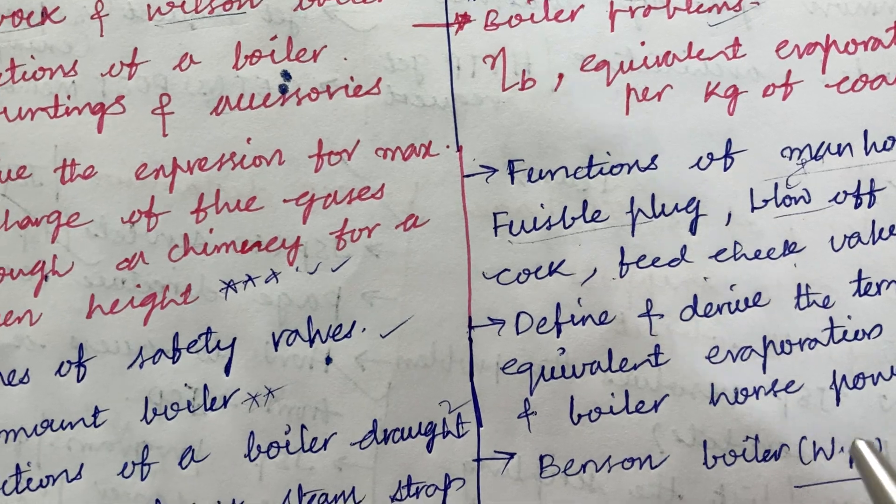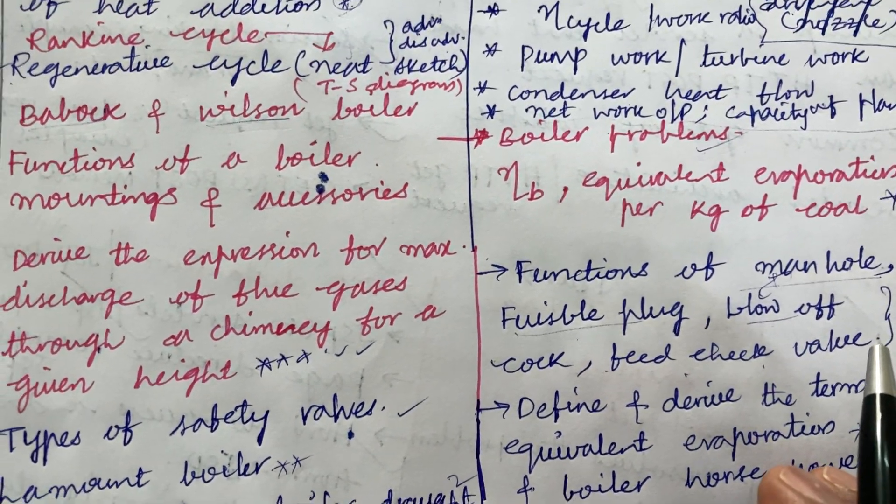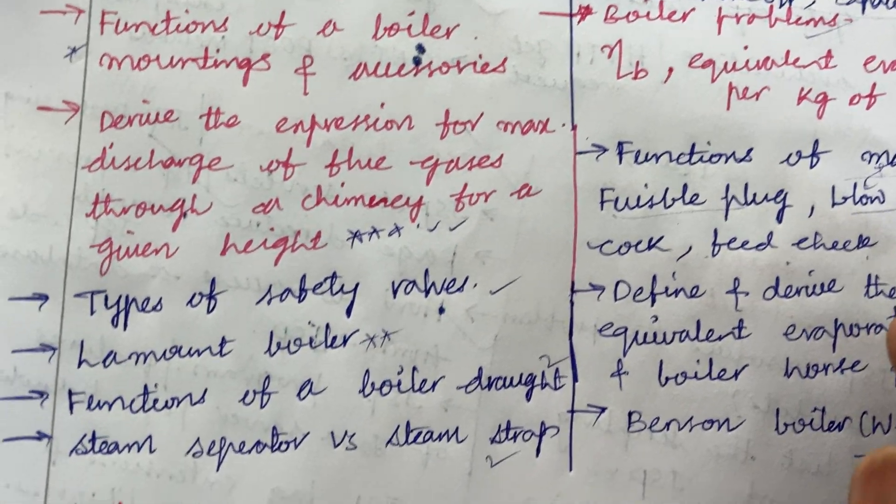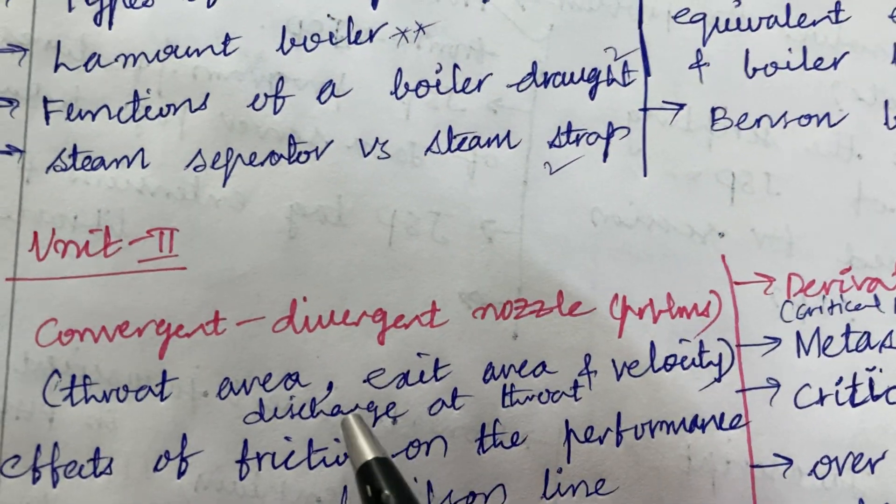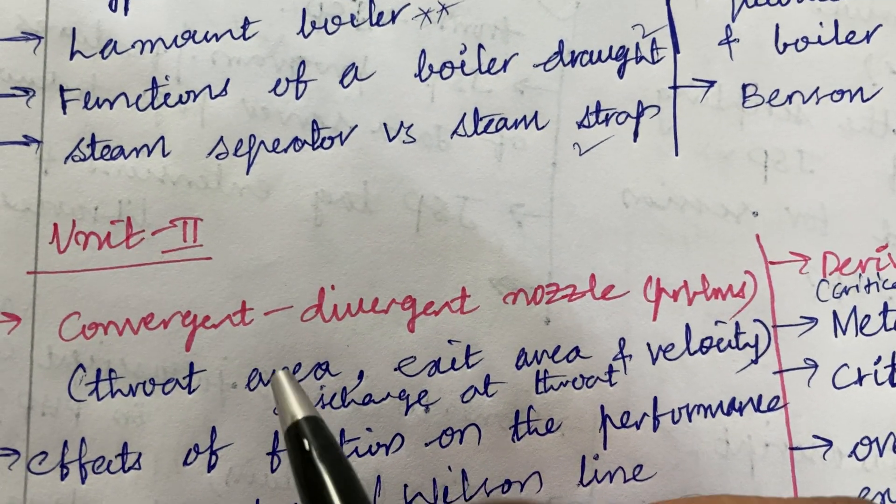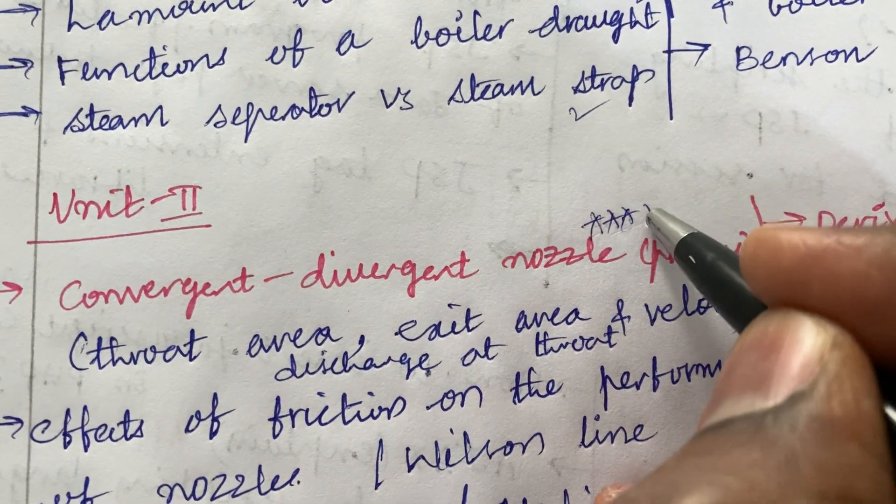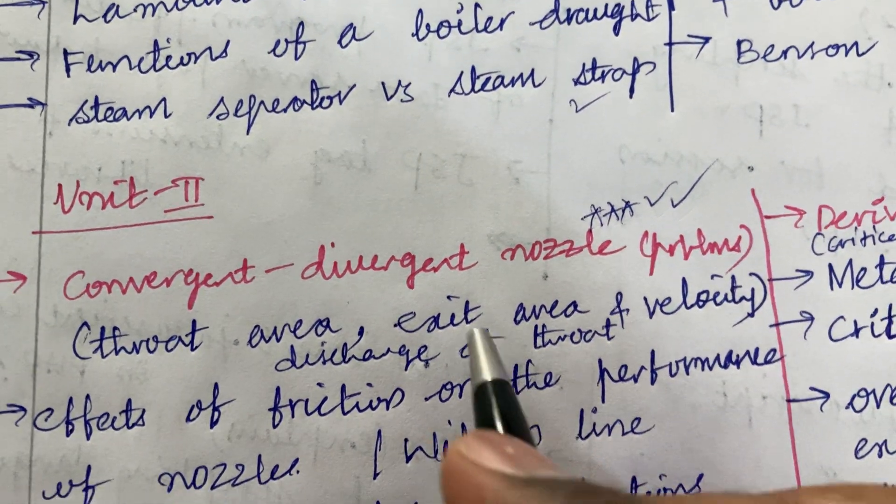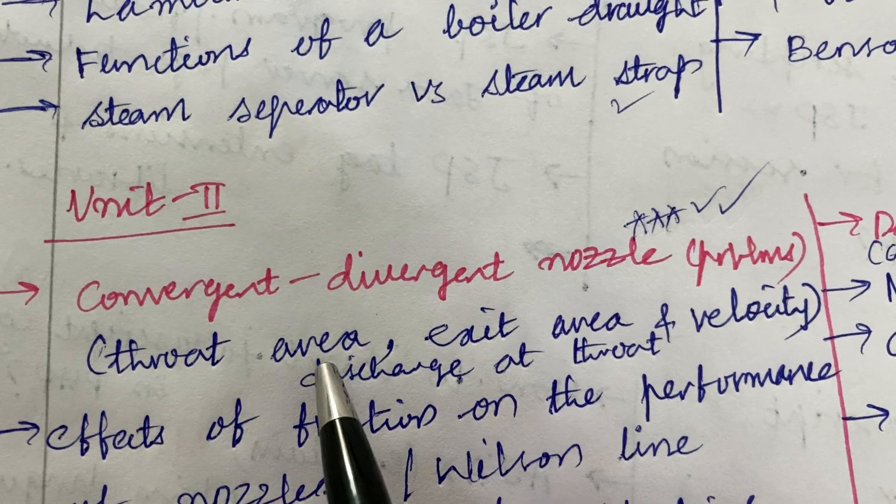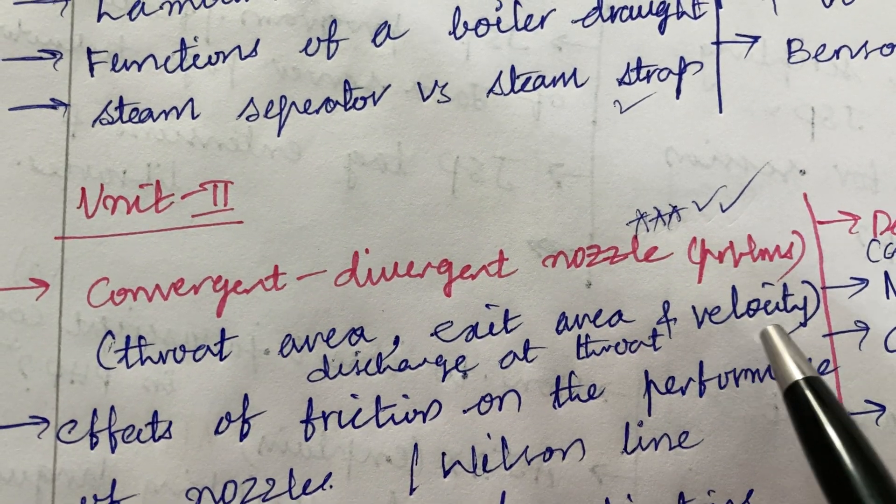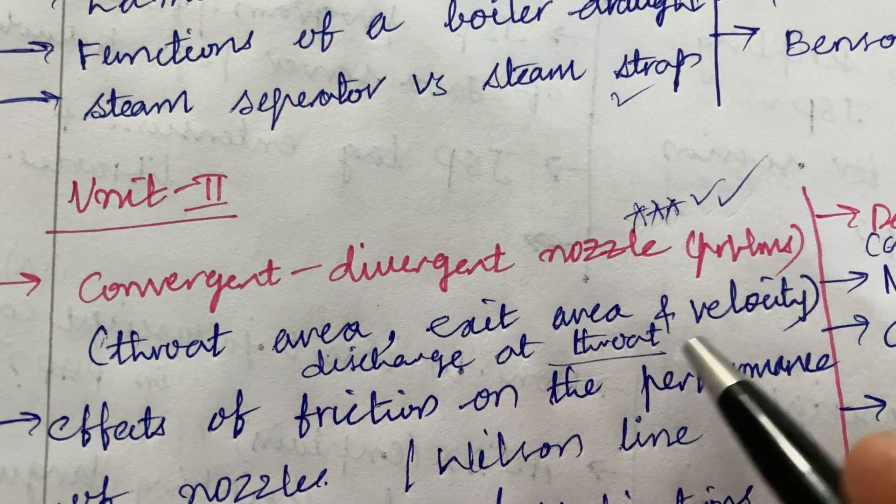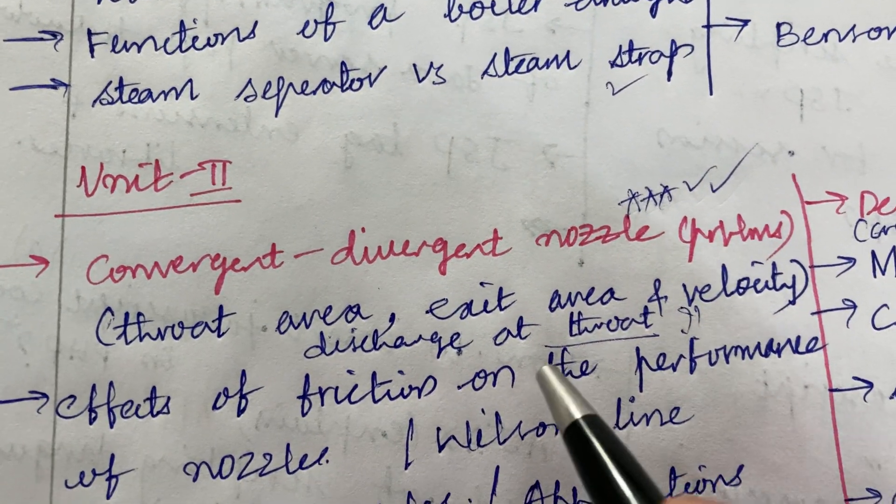Dear students, these concepts are very important. If you are going to skip any part, you cannot clear this course. Each and every part you are supposed to work out. The second unit question is all about the nozzles. Convergent divergent nozzle problems are said to be a top most question. For sure, you are going to get a problem to work out the throat area, exit area as well as exit velocity and the throat area and if any parameters, you are supposed to work out.